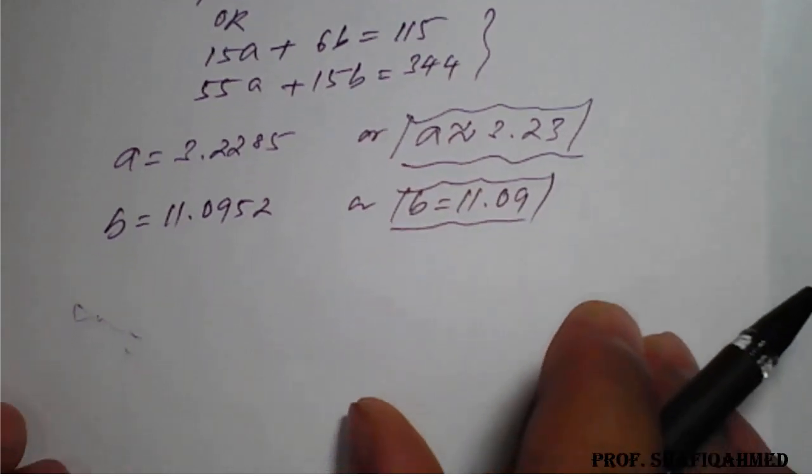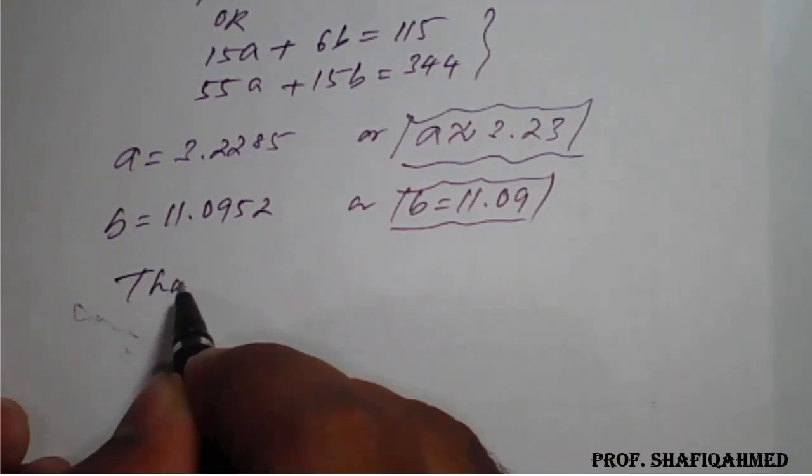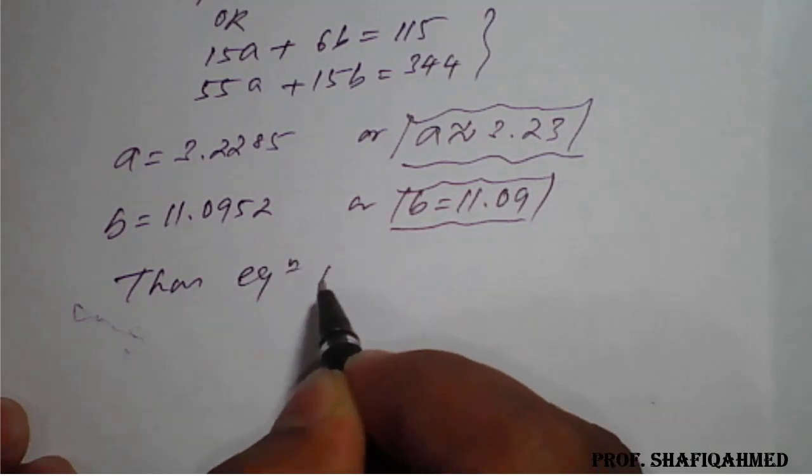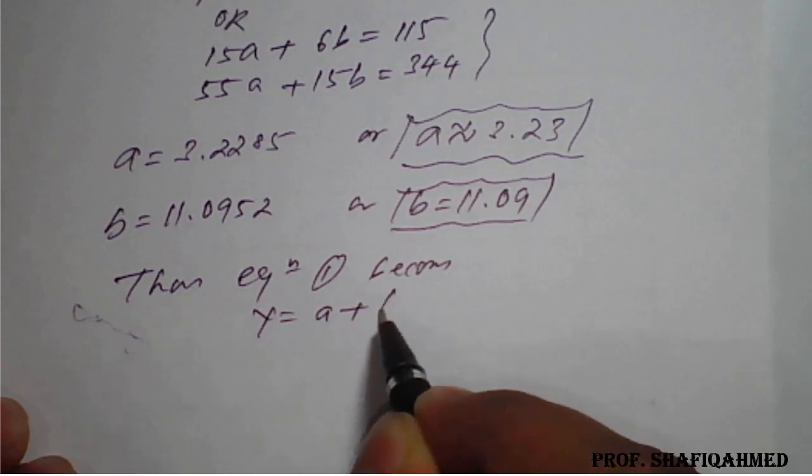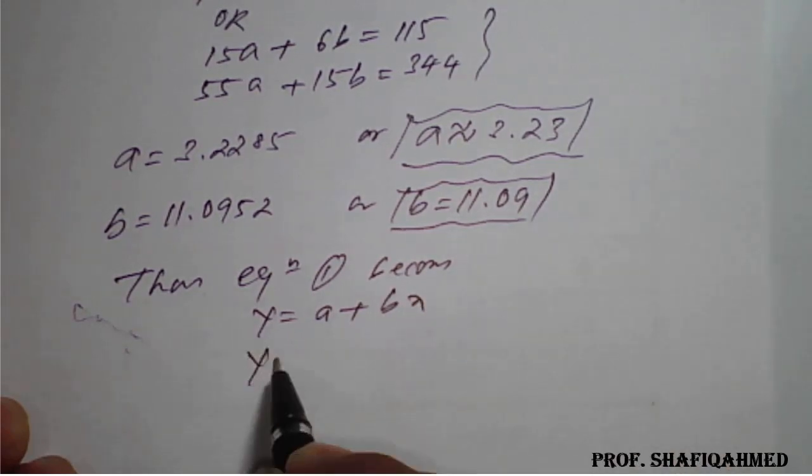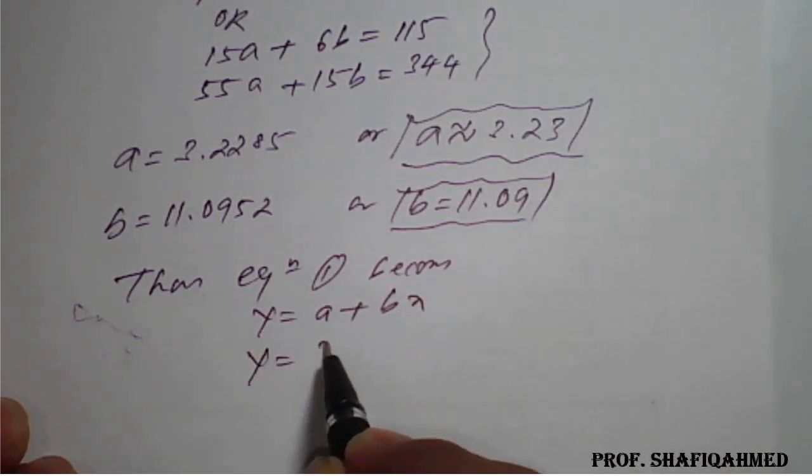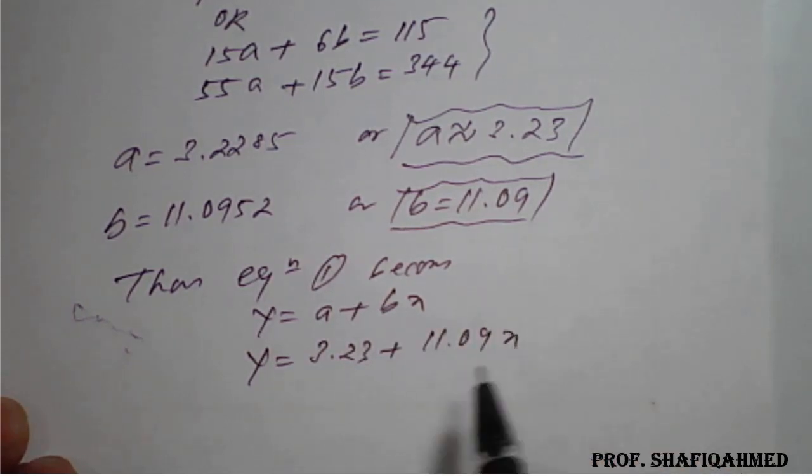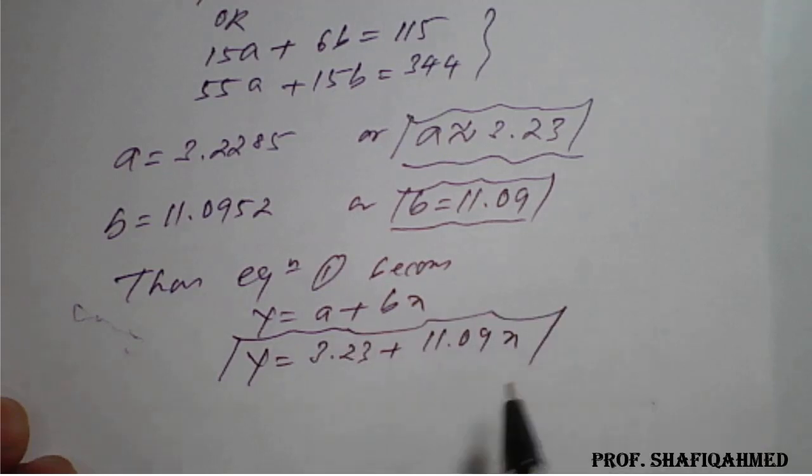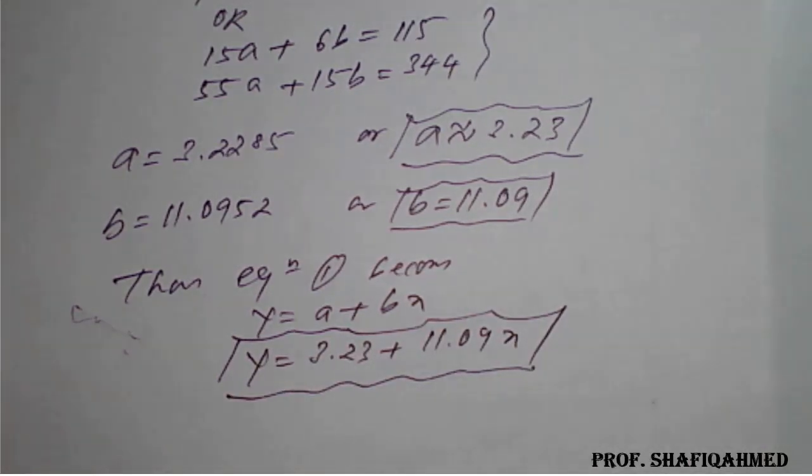So thus, equation 1 becomes, that is, y equals a plus bx is our equation. So y equals 3.23 plus 11.09x is the required best fit for the given data of x and y for the straight line. So in this way we need to solve the examples.